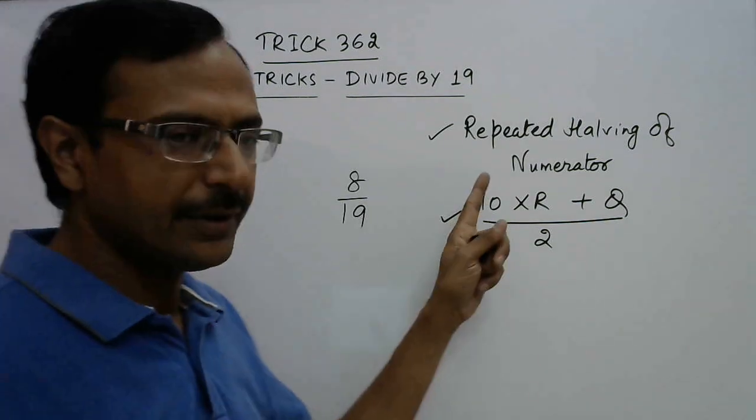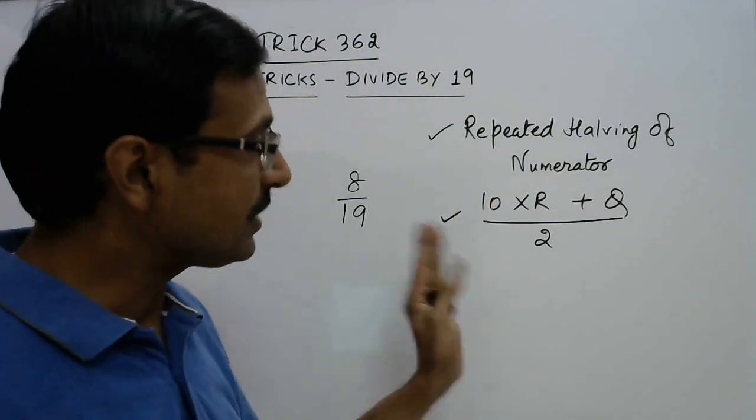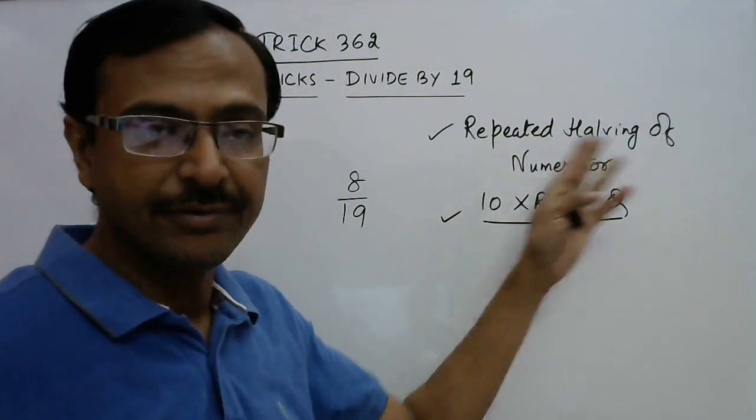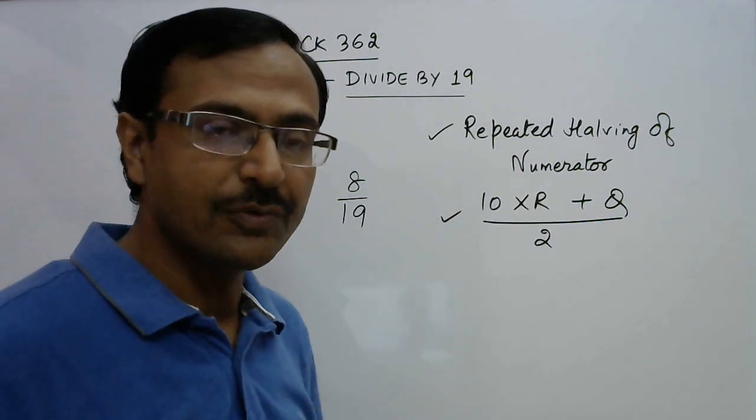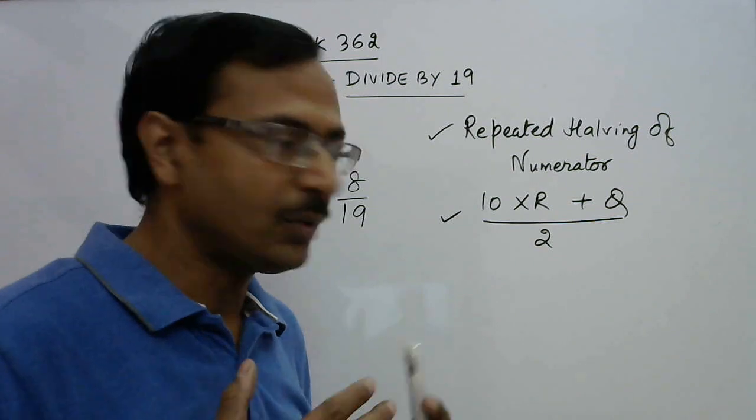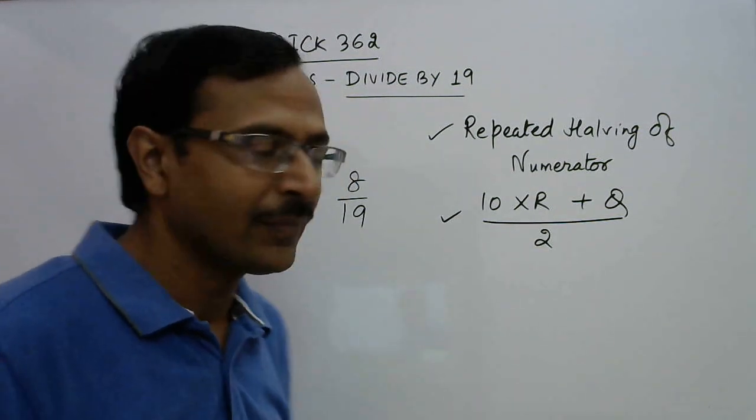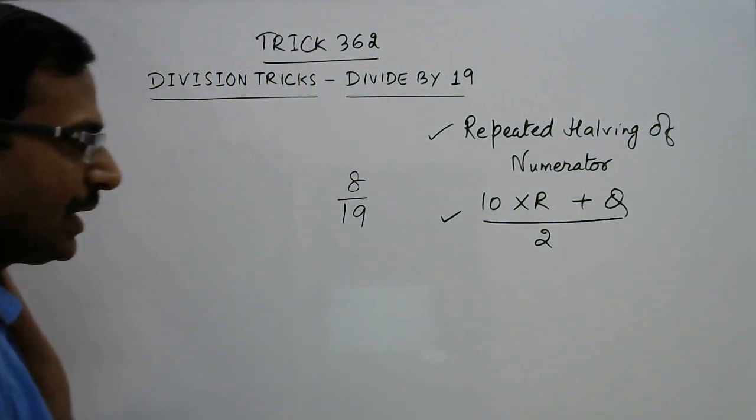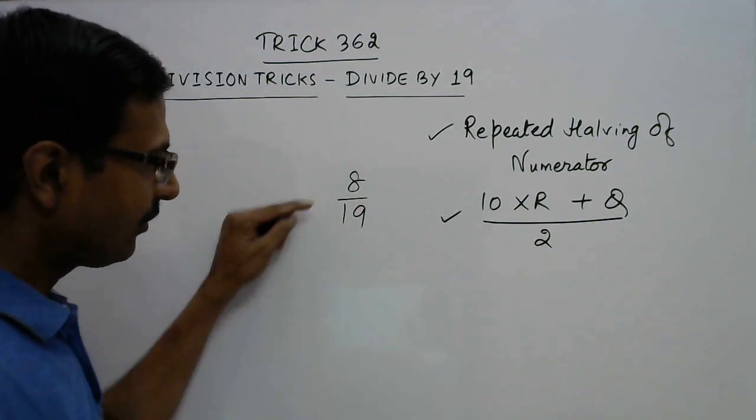Now see, I have written the shortcut here. This method is called repeated halving of numerator, so we have to take the half of the numerator once, twice, thrice, and so on. Now see what happens. The first one here is 8.